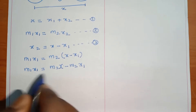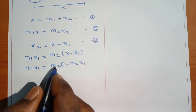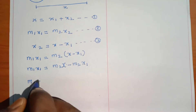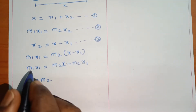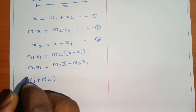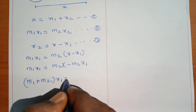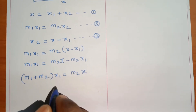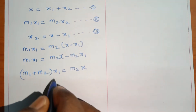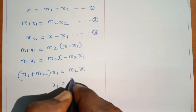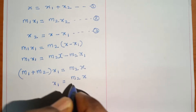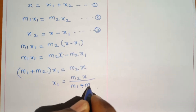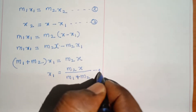Now x1 is common. We have m1 plus m2 into x1 equal to m2·x. From this equation, x1 equals m2·x divided by m1 plus m2. This is equation number 4.